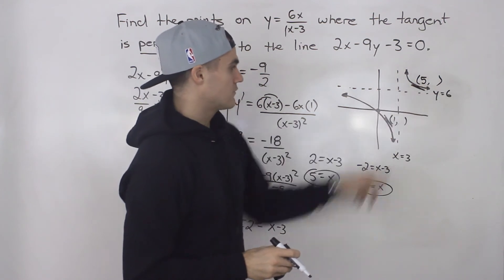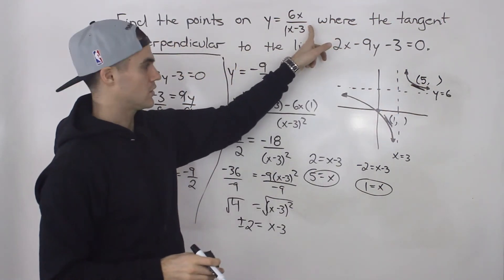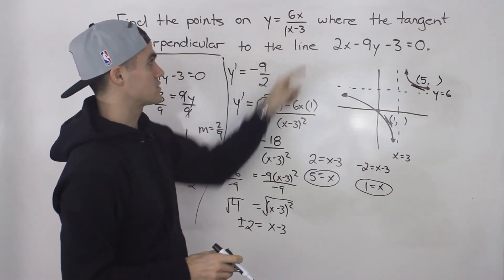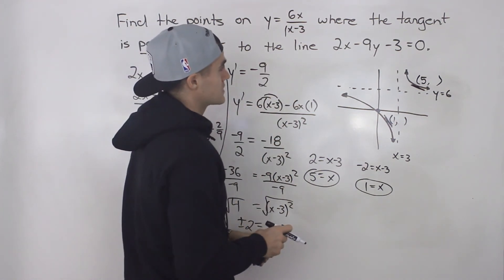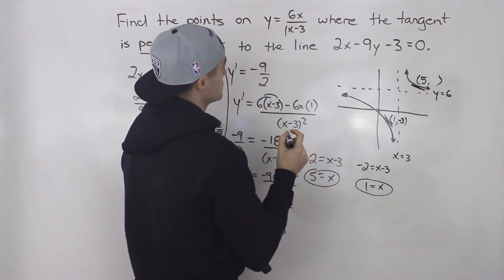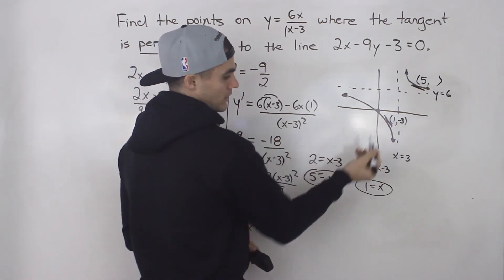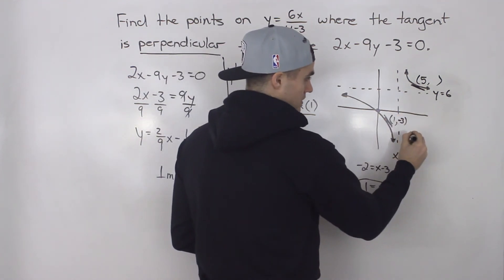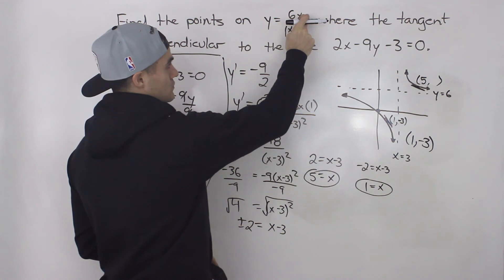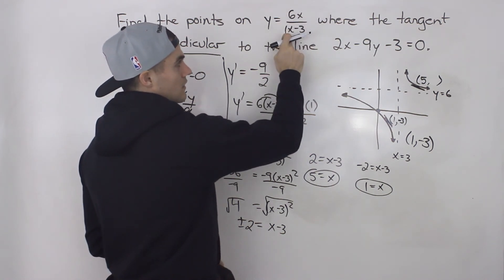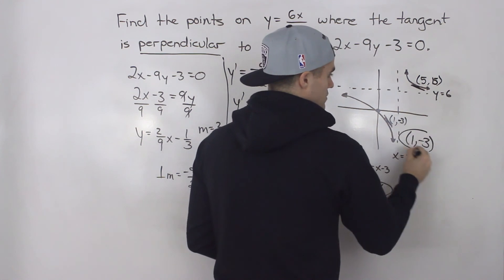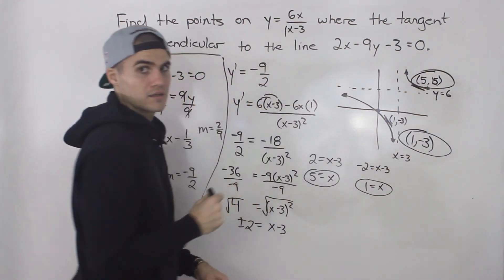To find the y-values, plug the x-values into the original equation. For x equals 1: 6 times 1 over 1 minus 3 equals 6 over negative 2, which is negative 3. So one point is (1, negative 3). For x equals 5: 6 times 5 is 30, and 5 minus 3 is 2, so 30 over 2 gives 15. The other point is (5, 15). Those are our two answers.